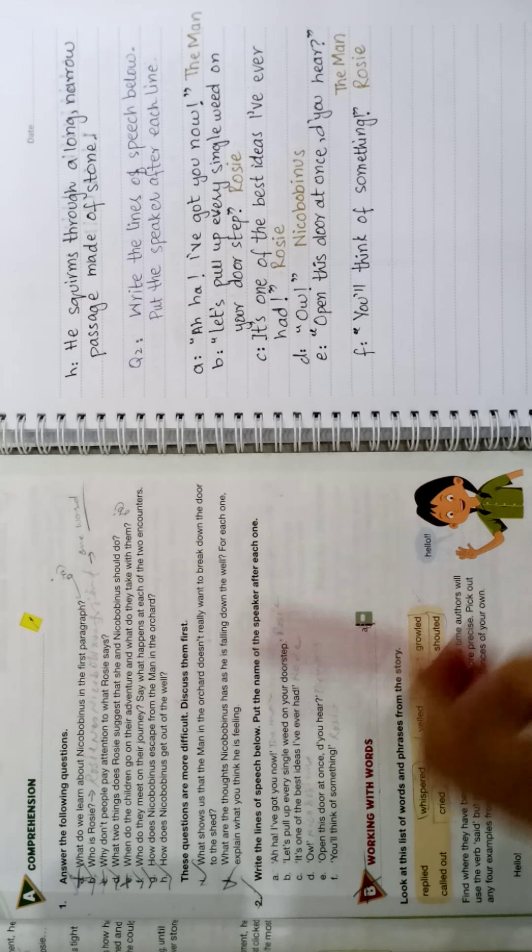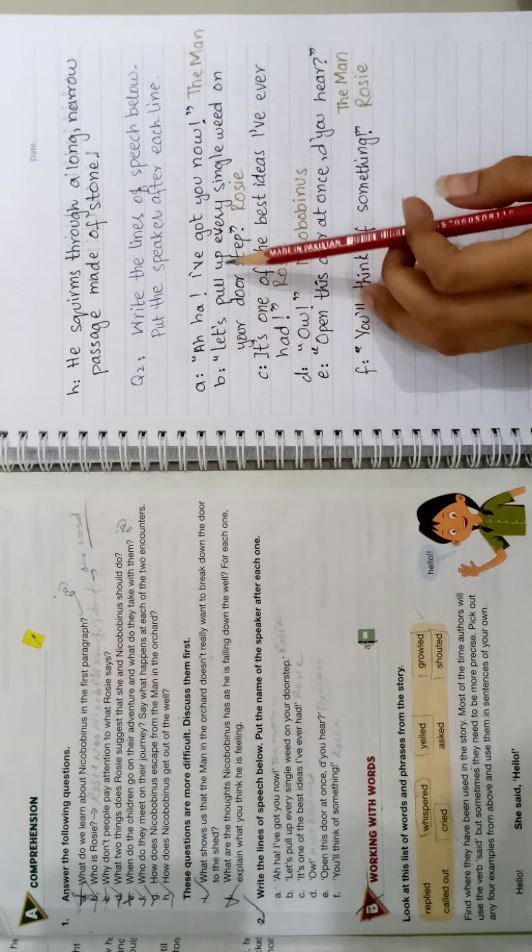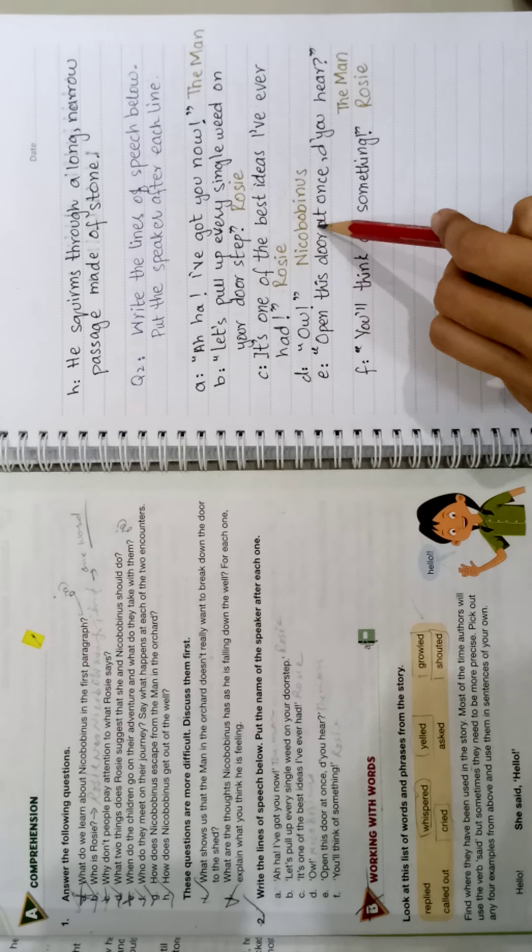Now question number 2: write the lines of speech below, put the name of the speaker after each one. A. Aha, I have got you now. Who did it? B. Let's pull up every single weed on your doorstep. Who did it? Rosie.